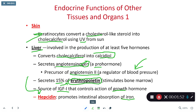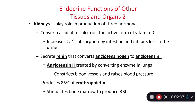Hepcidin is a hormone that relies on vitamin C to have good activity, which is why individuals suffering from low iron concentrations are often prescribed iron and vitamin C supplements at the same time.